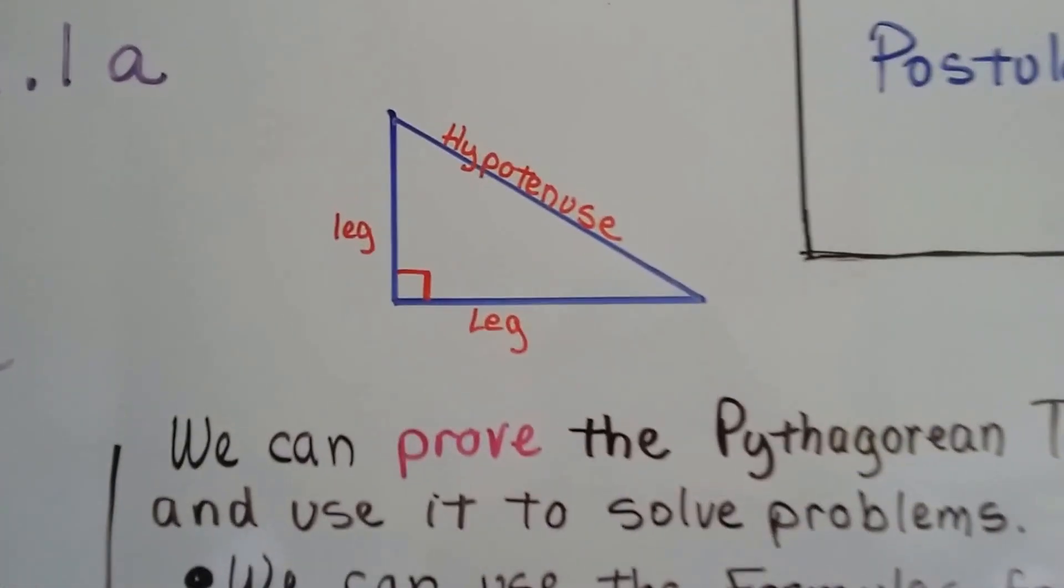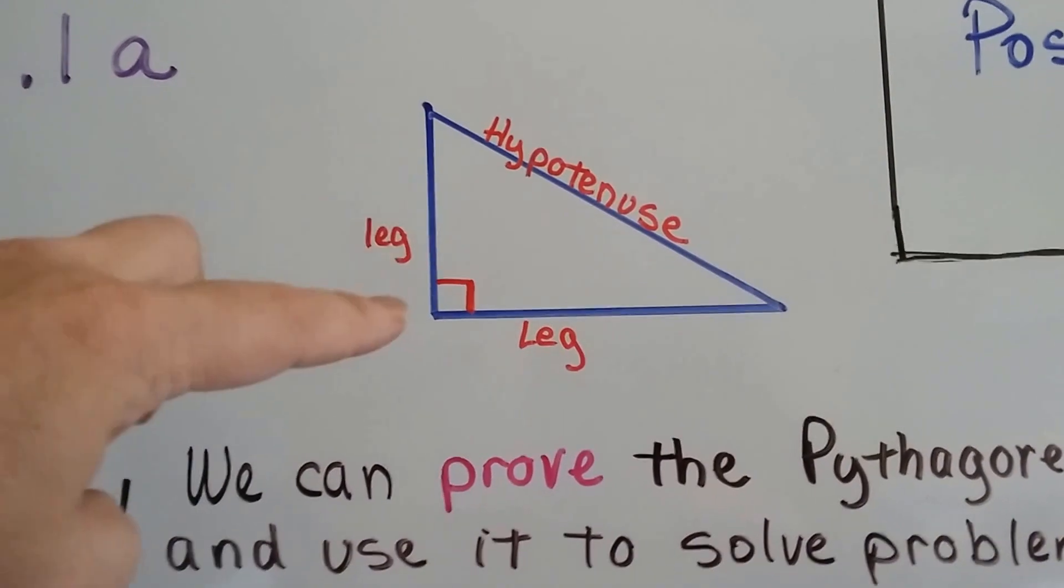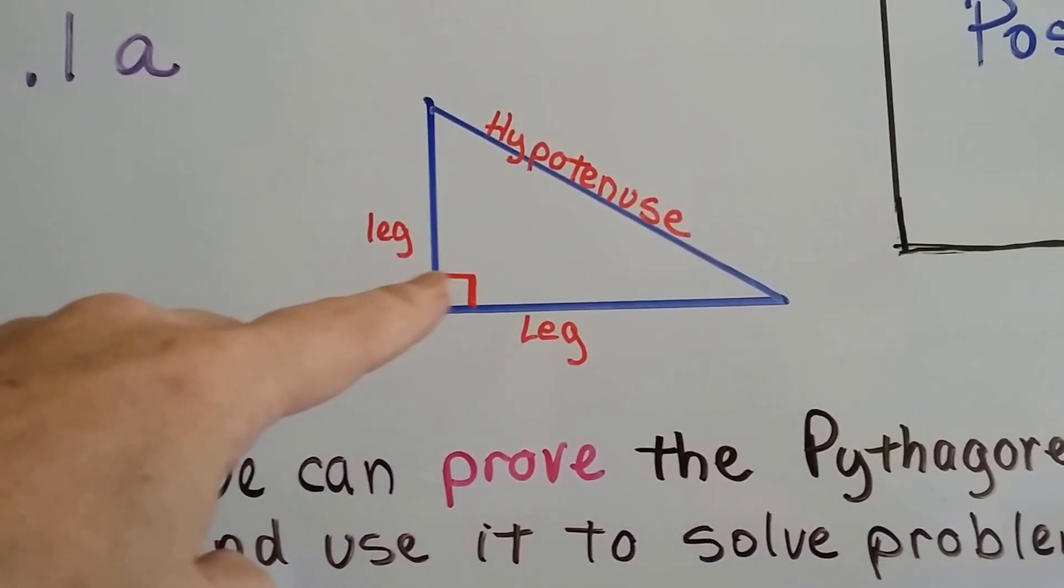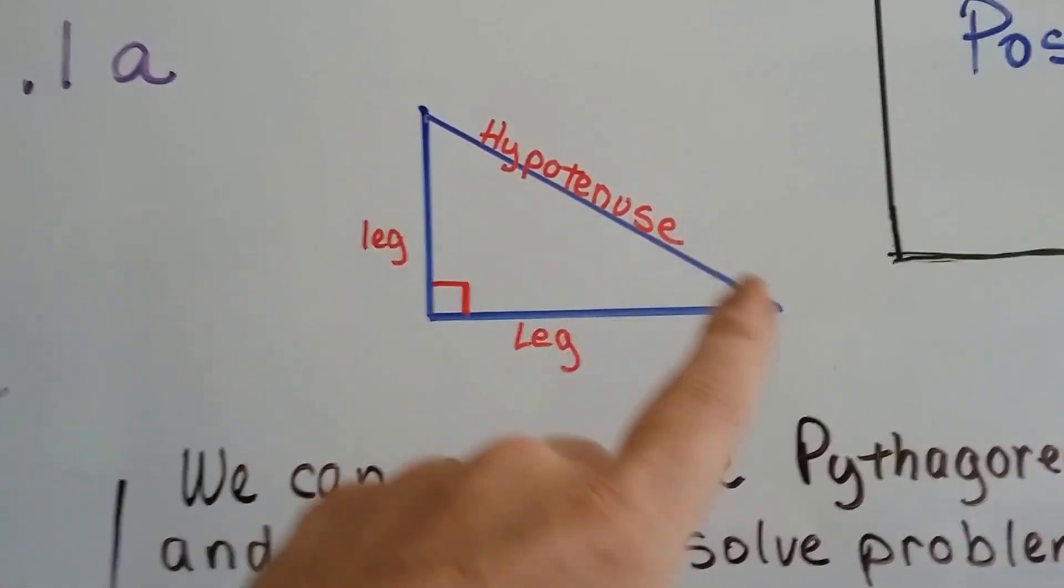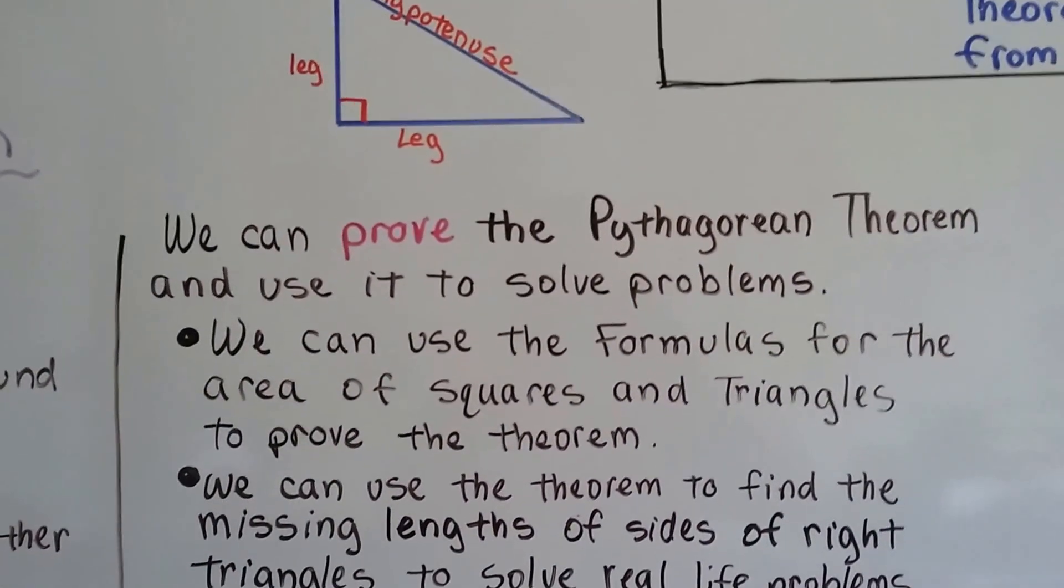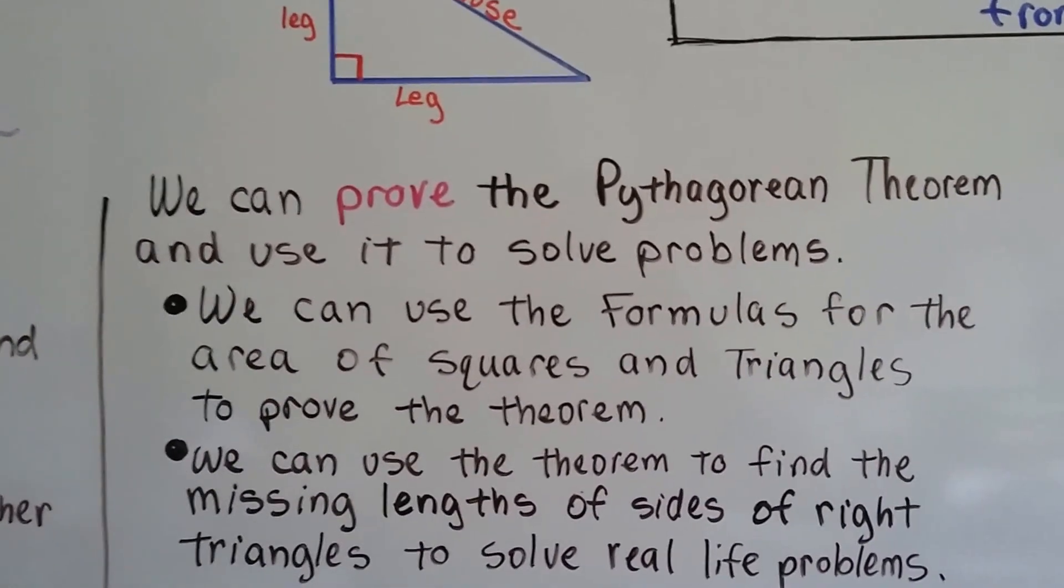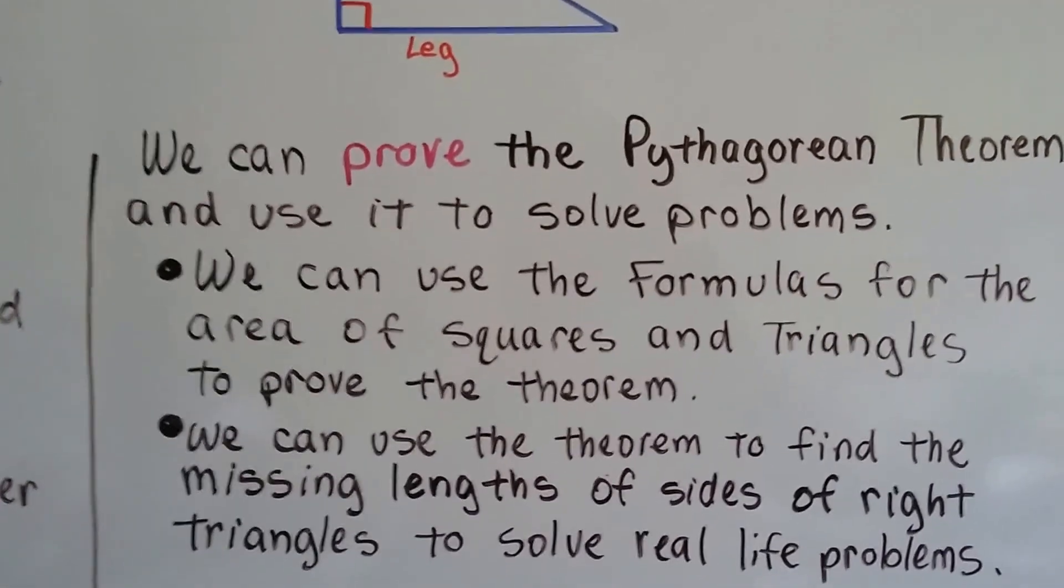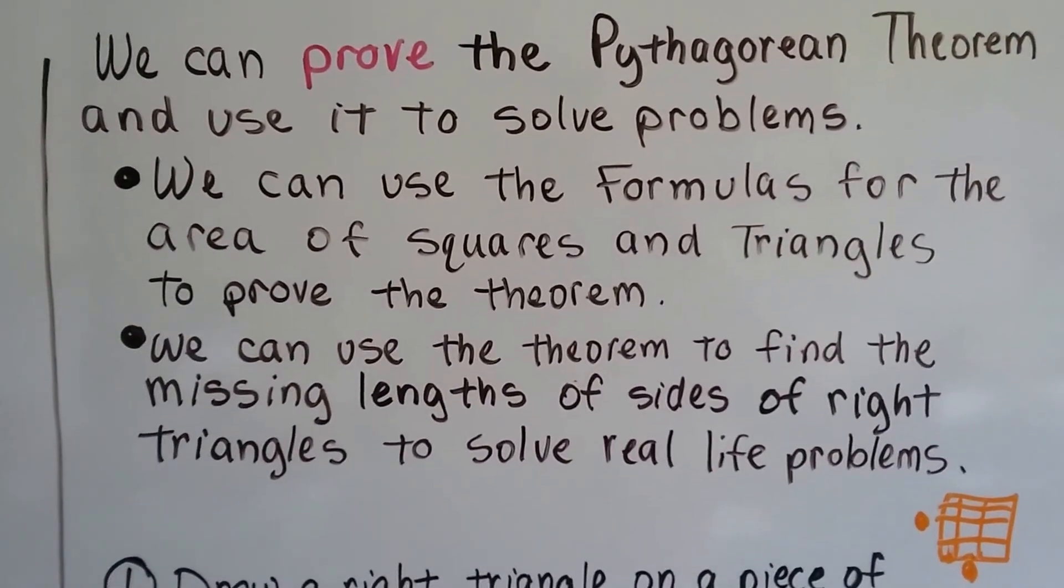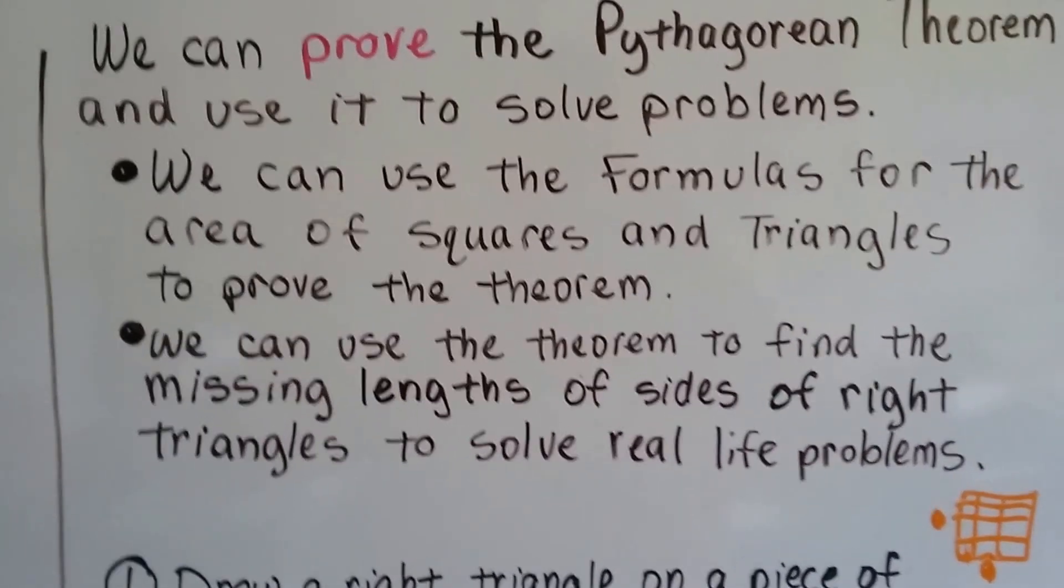A right triangle has these parts. It's got a leg and a leg, and we can see the right angle symbol right here, and the long side is the hypotenuse. We could prove the Pythagorean Theorem and use it to solve problems. We can use the formulas for the area of squares and triangles to prove the theorem. We can use the theorem to find the missing lengths of sides of right triangles and solve real-life problems.